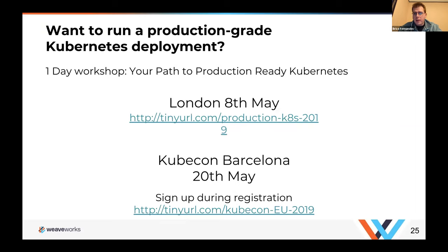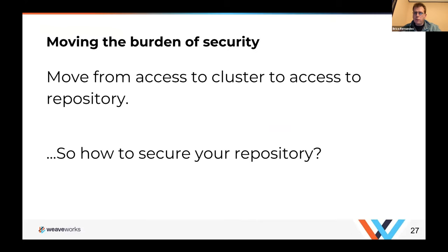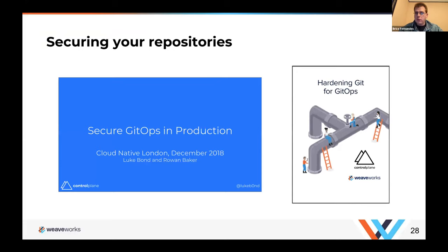If you want to learn more, WeaveWorks is giving workshops — if you're in London, Europe, or attending KubeCon Barcelona, we have workshops going into more details on how to run and apply this. Now the question becomes: we've moved the security burden from our CI/CD pipeline and command-line tools into our Git repository, where changes trigger production system changes. So the question is: how do you secure your Git repository? This is where I hand over to Andy.